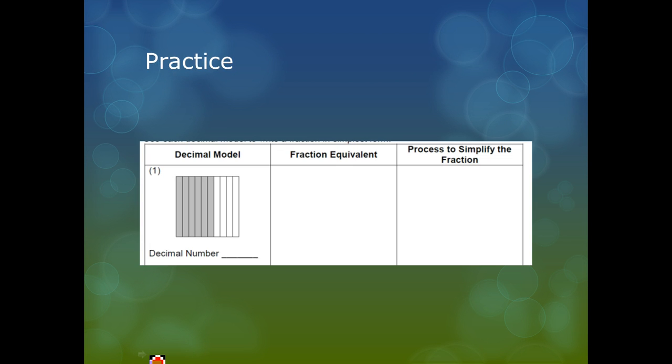So let's look at another example here. Here I have a decimal model, and I have six out of ten parts that are shaded. So I have six tenths that are shaded. So to write this as a decimal, I would write 0.6. This is my tenths place.